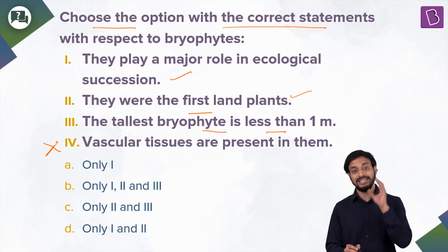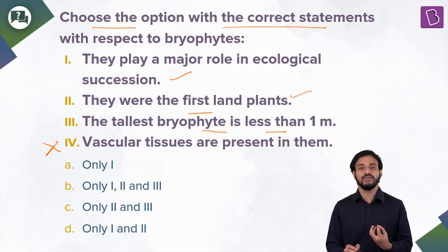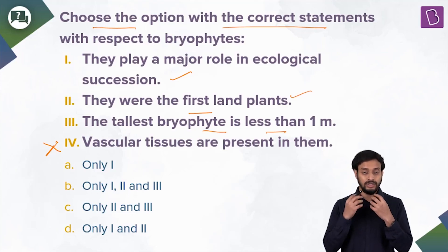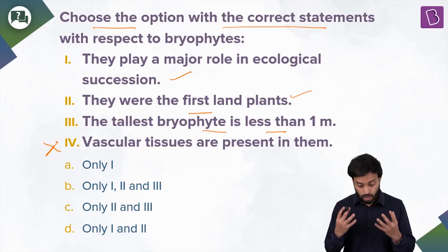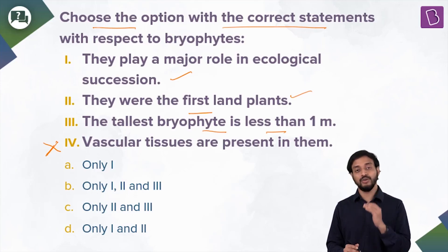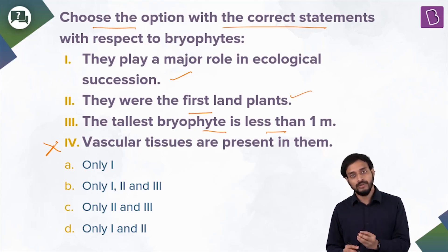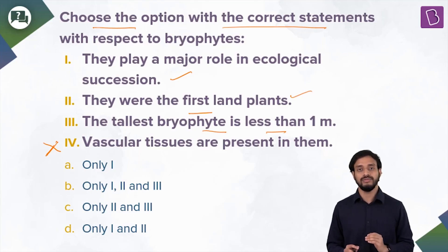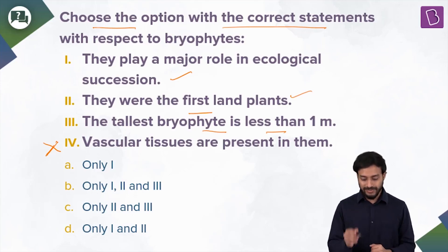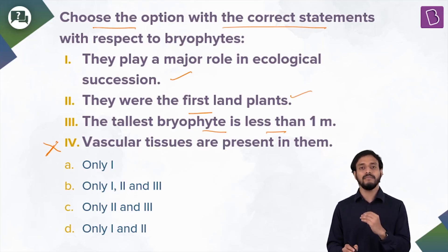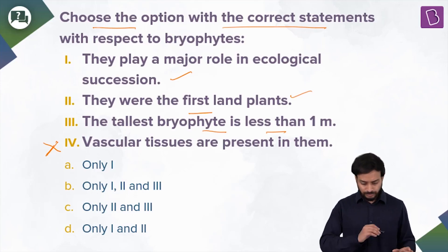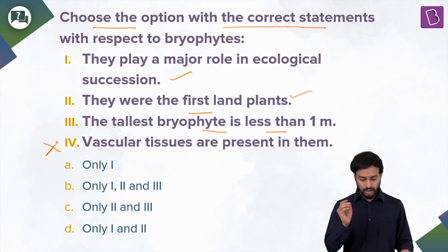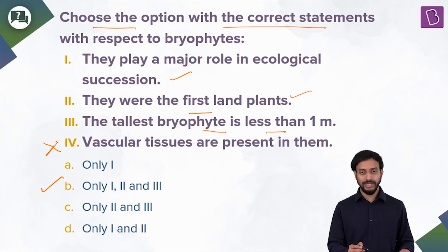The reason they are small is that since they do not have vascular tissues, if the bryophytes grow very tall, water and minerals from the soil would not reach the leaves at the topmost portion. So that's why they do not grow much in height. So basically statements one, two, and three are correct, and option B should be correct.